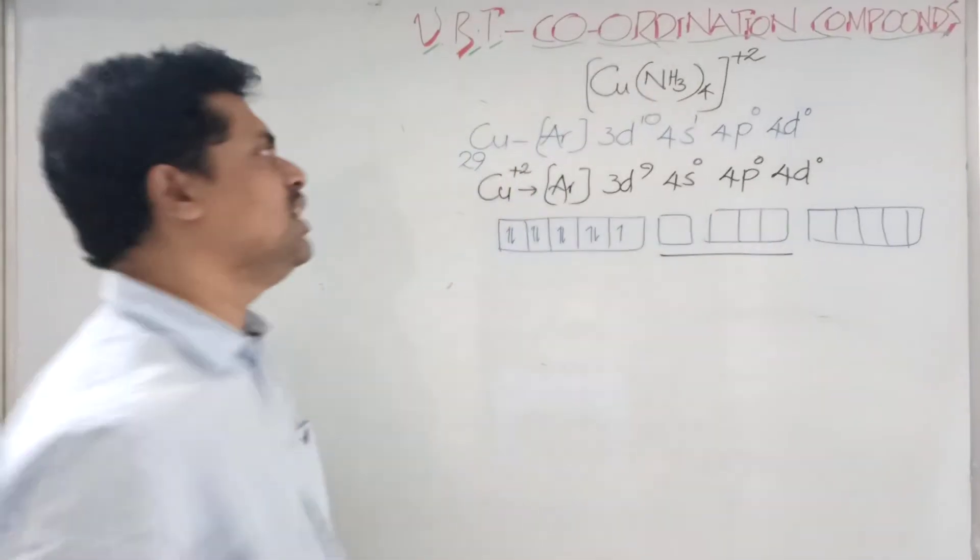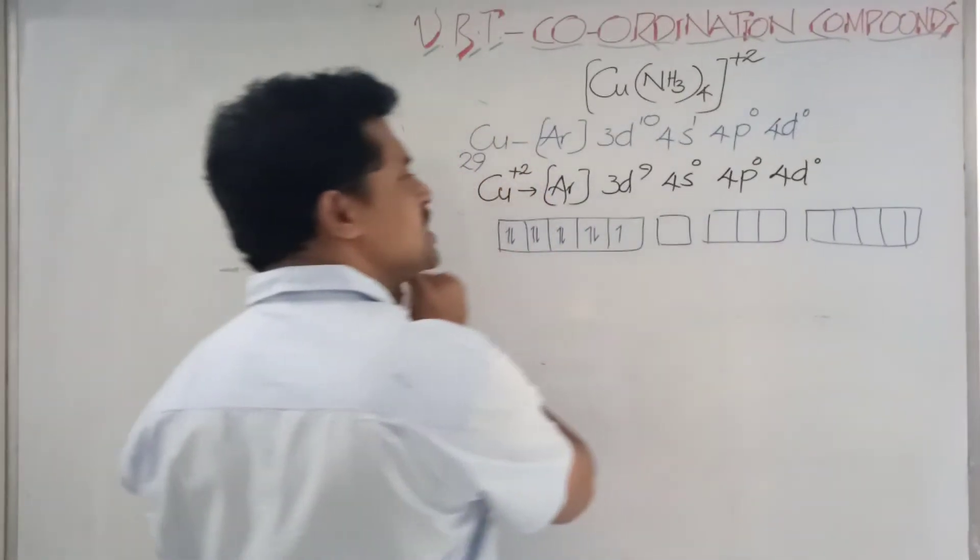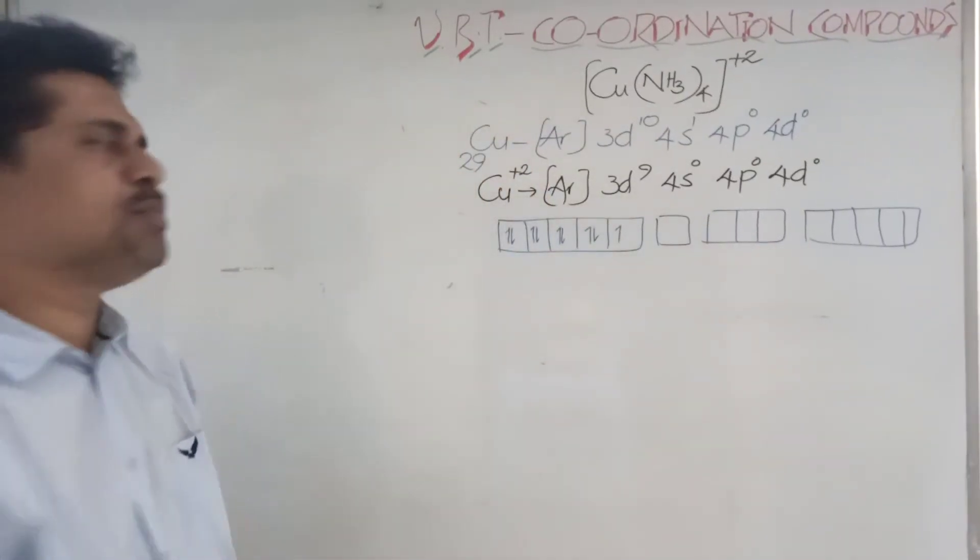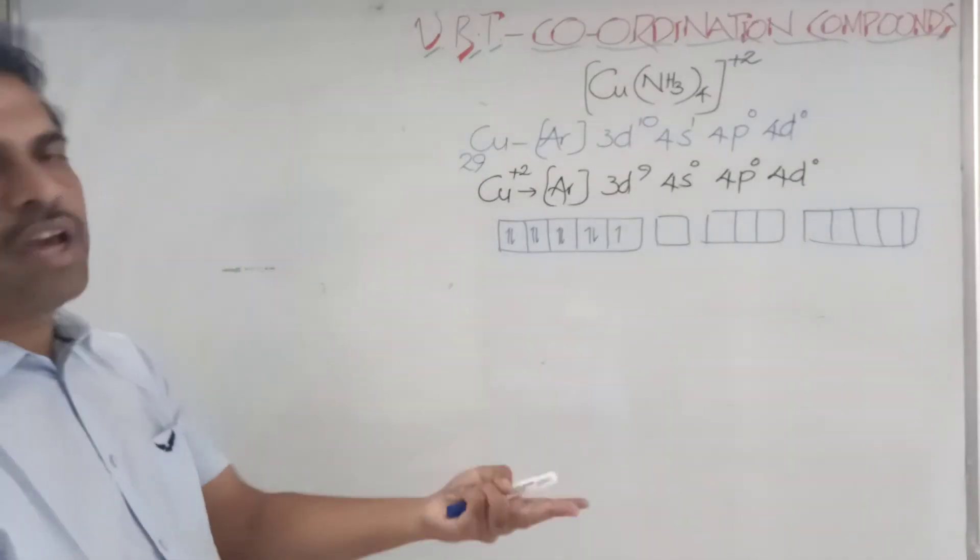What we expect is sp³ - four orbitals, one s orbital, three p orbitals we expect, but the data is not matching with that one. Tetra-amine copper sulfate is going to be a square planar complex.